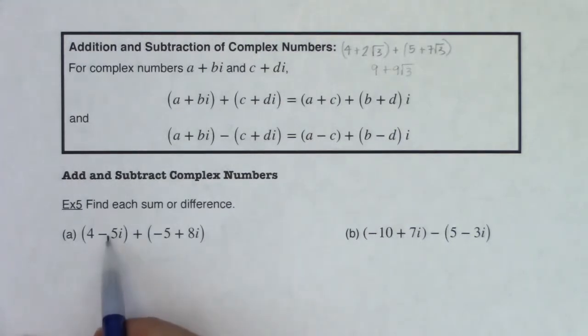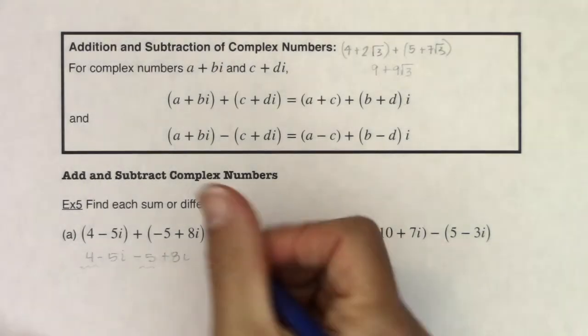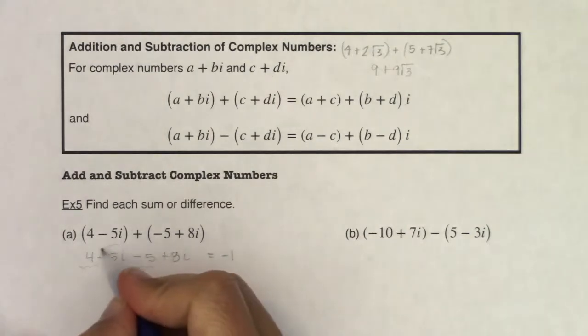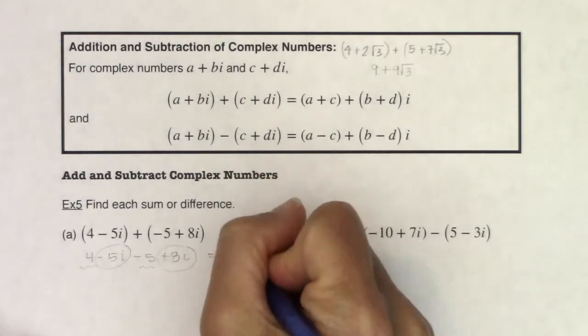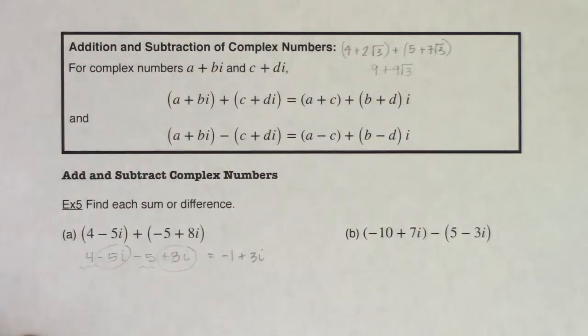So if I look at these two complex numbers, and the directions are to find the sum or difference, let's add these two complex numbers. I'm going to remove the parentheses from these binomials. So I have 4 minus 5i, ultimately here minus 5 plus 8i. And as I look at it, I have a constant and a constant, I have my real part. So 4 minus 5 is equal to negative 1. I have negative 5i and positive 8i, while negative 5 plus 8 is 3. So I ultimately have 3i's left over. So I'm adding the real parts and the imaginary parts. I'm combining those because they're like terms.